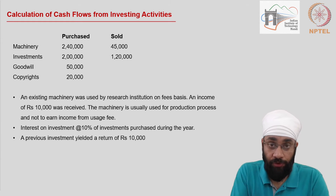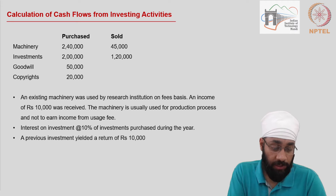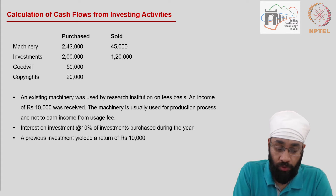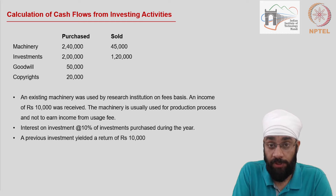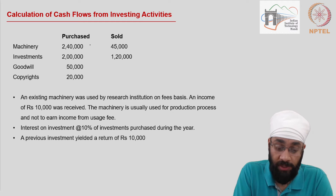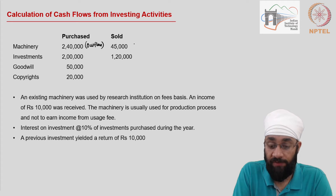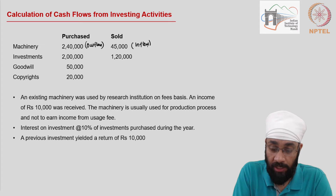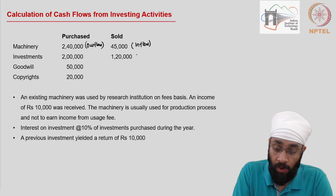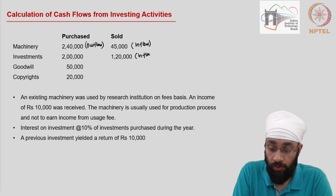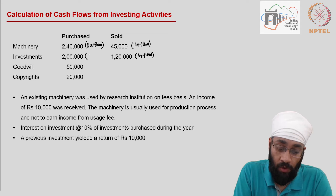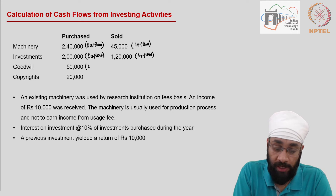Let us read through the details to understand what is happening here. Machinery worth 240,000 has been purchased during the year, which means this is an outflow. Also, machinery worth 45,000 has been sold, which means this is an inflow. Likewise, all sales are going to give you inflows and all purchases are going to result in an outflow.